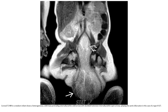This is a T2 MRI in a newborn infant showing a heterogeneous solid mass protruding externally with presacral extension. Internal splaying of the levator muscle is noted, with aortic displacement — a case of Type 2 sacrococcygeal teratoma.